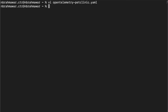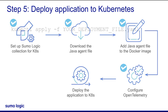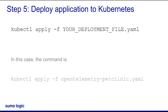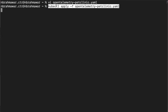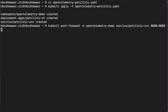Now I'll save the file and exit the editor. The .yaml file is ready to be deployed on Kubernetes. To deploy the Java app to Kubernetes, on the terminal, I'll execute the kubectl command. In this case, the command is: kubectl apply -f opentelemetry-pet-clinic.yaml. At this point, it might give an error if you're not logged into the Kubernetes cluster. Log into Kubernetes and deploy the app with the kubectl command in the terminal window. Once the Java app is deployed, access it to generate some transactions on the app.